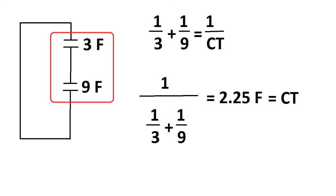So, 1 over 1 over 3 plus 1 over 9 equals 2.25 farads for the capacitance total of the circuit.